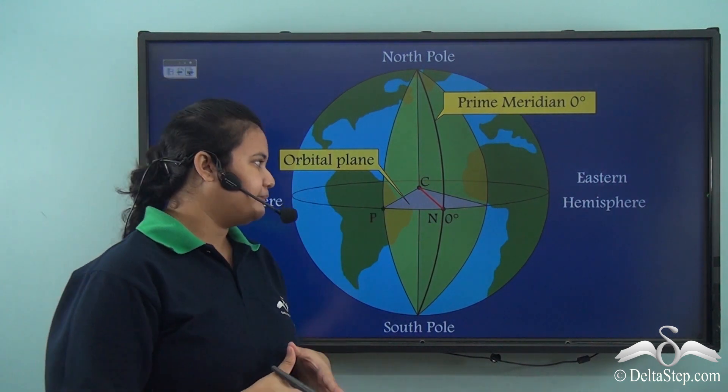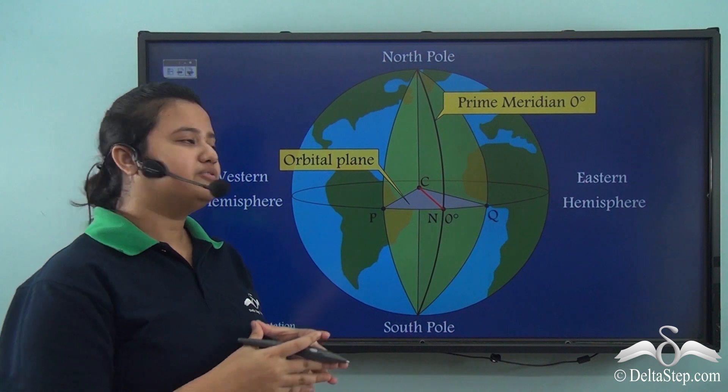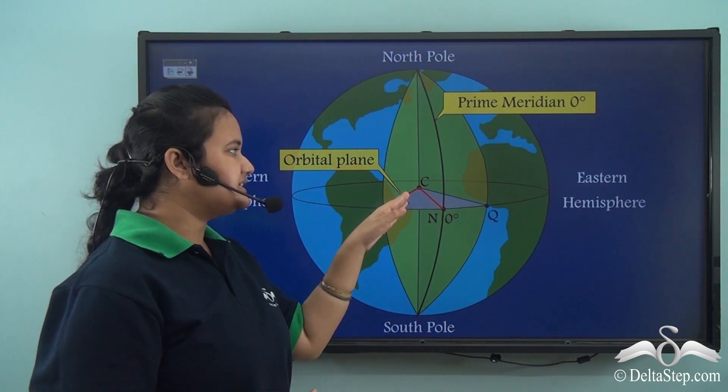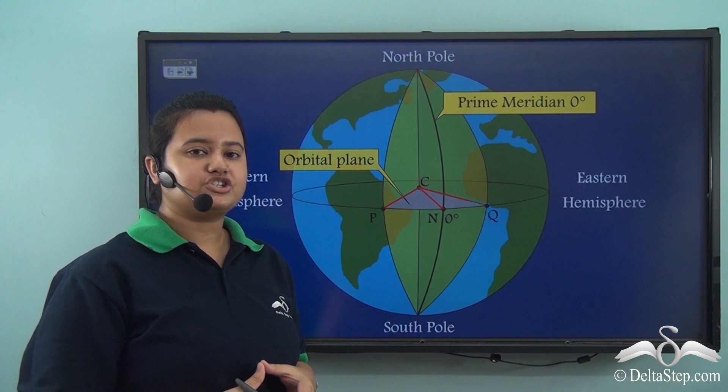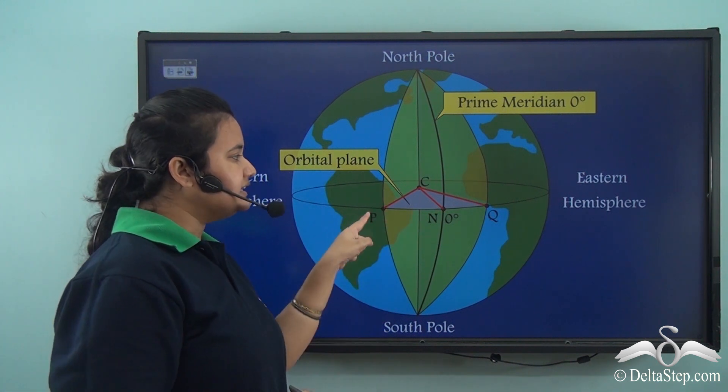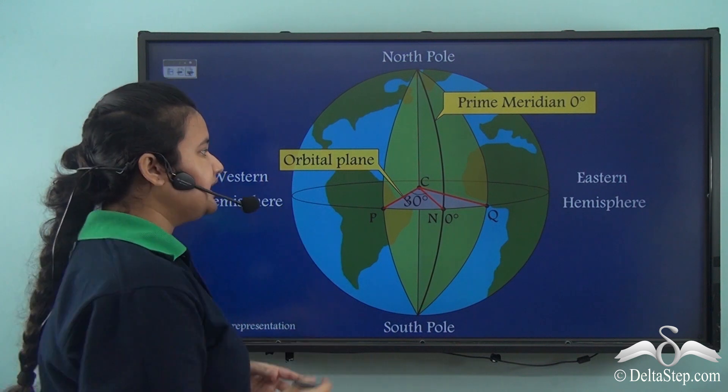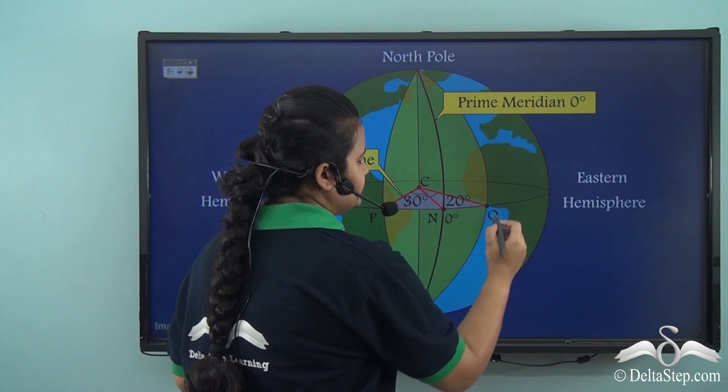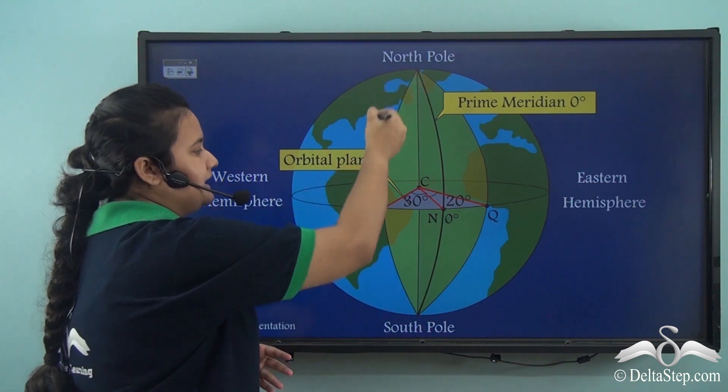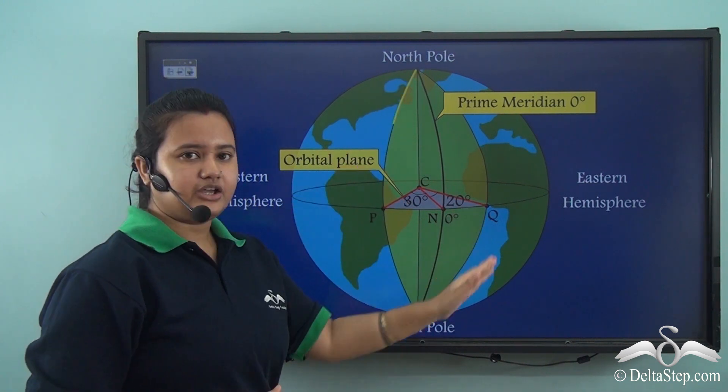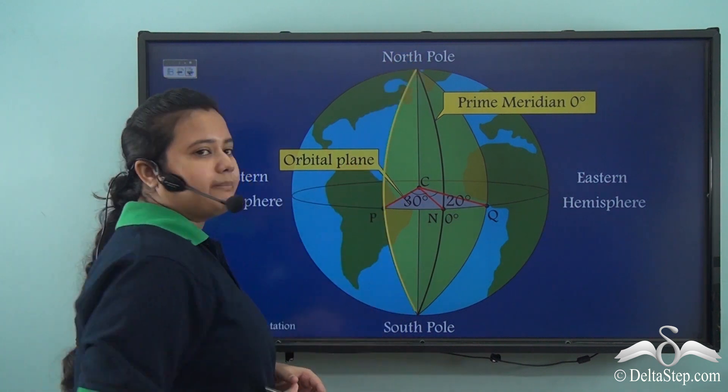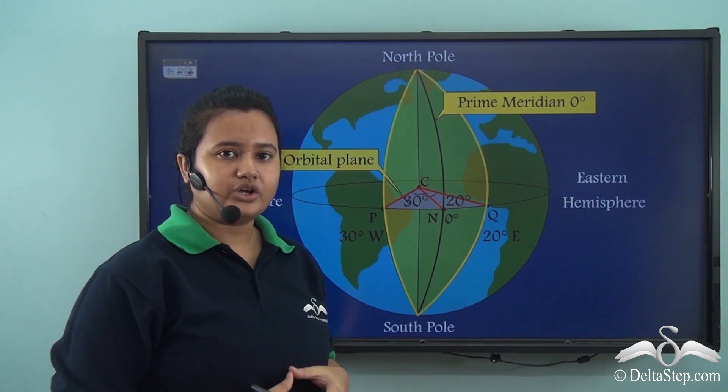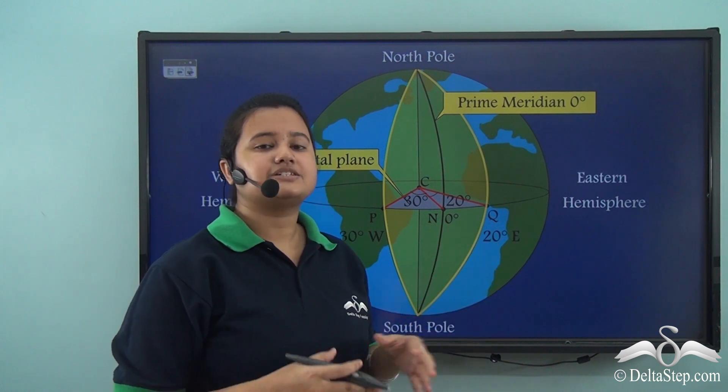Take two arbitrary points P and Q on the circumference of the orbital plane. Let's connect these two points with C that is the centre of the Earth. We shall measure the angle between CN and these two lines. The angle between CN and CP is 30 degree while the angle between CN and CQ is 20 degree. If we draw lines passing through P and Q, then the longitude passing through P will be known as 30 degree west and the line passing through Q will be known as 20 degree east longitude.